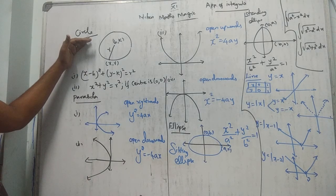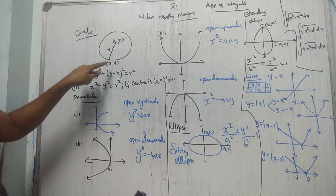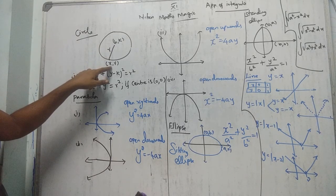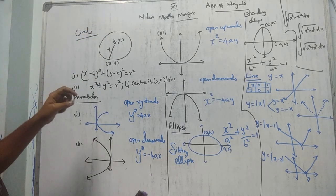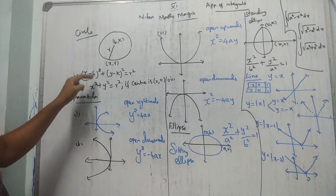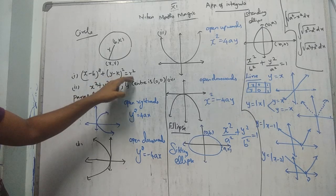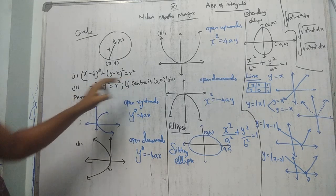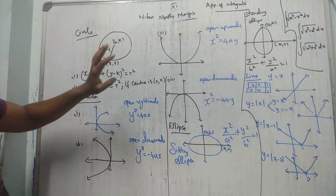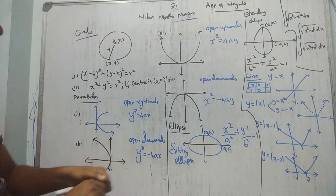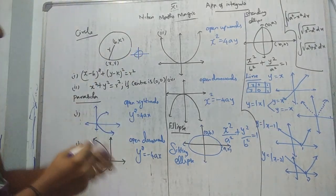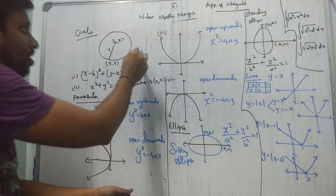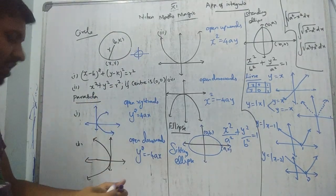First concept: What is a circle? The center point is (h, k) and a point on the surface is (x, y). The distance between these two is the radius. So if the center is given as (h, k), the equation is (x − h)² + (y − k)² = r². If the center is at the origin, the equation becomes x² + y² = r².